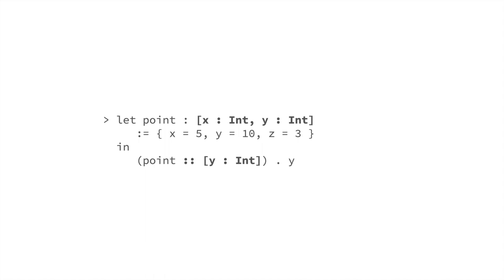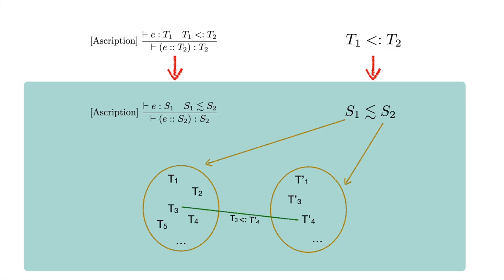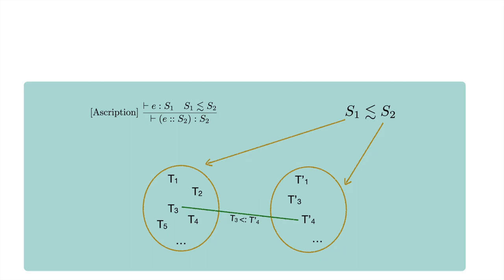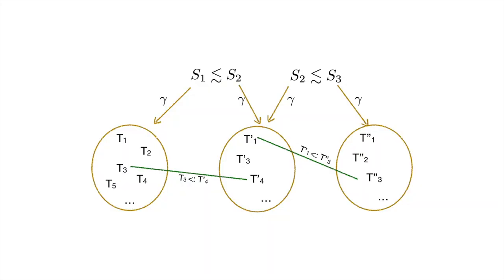A very similar process is followed for predicates. Consider this program, which takes a record named point and introduces two type upcasts that hide all fields except field Y. Type checking this program relies on the typing rule for ascriptions and on transitivity of subtyping. We can also mechanically generate a gradual typing rule for these expressions, by mechanically generating a gradual version of the subtyping predicate. This gradual predicate holds if at least one instance of the static predicate holds between types in the meaning of each gradual type.